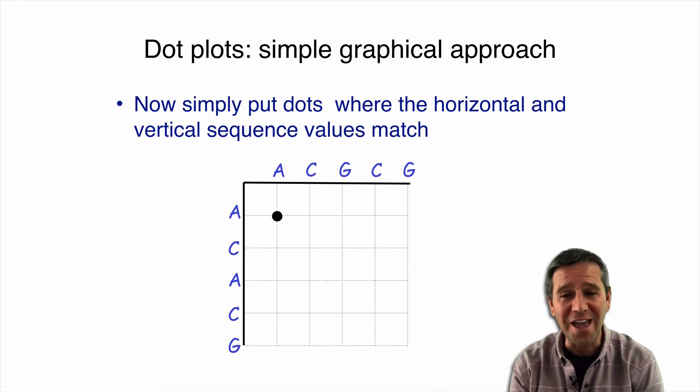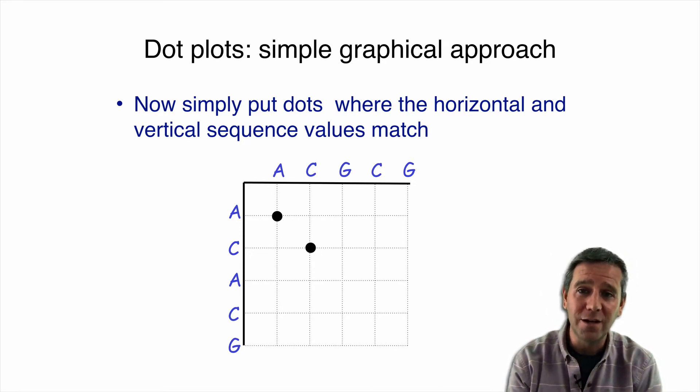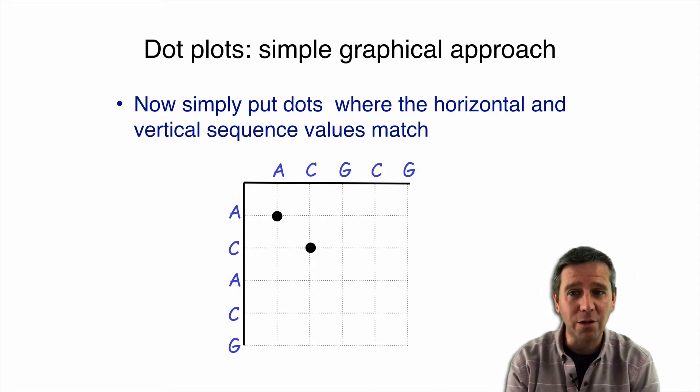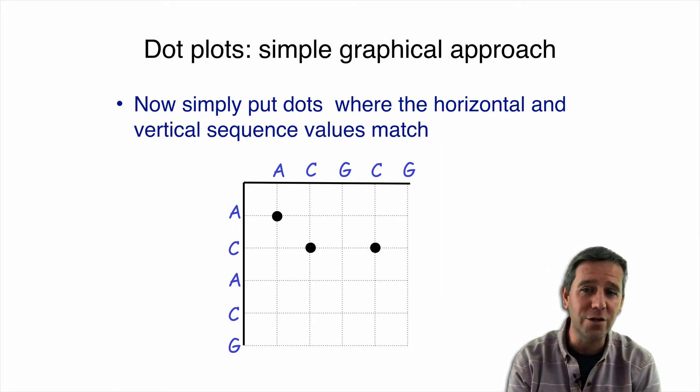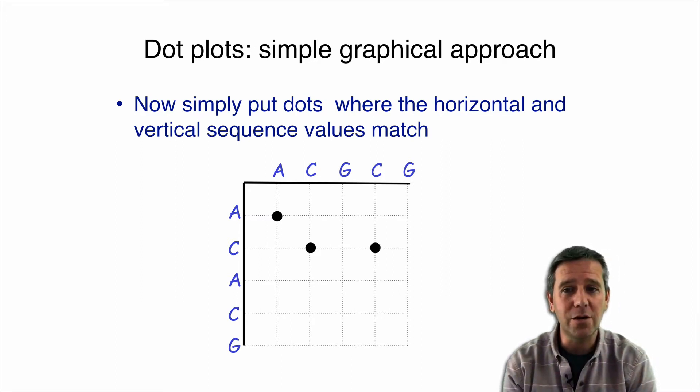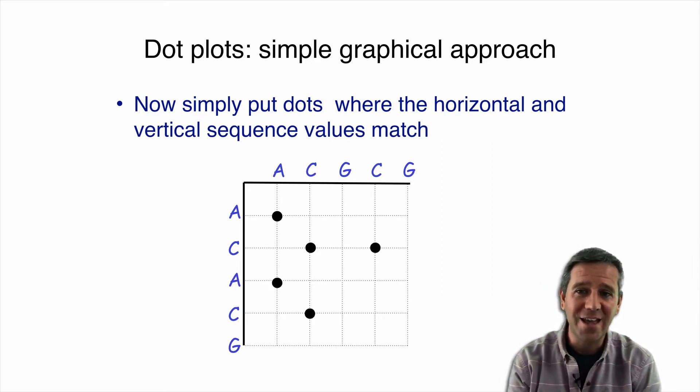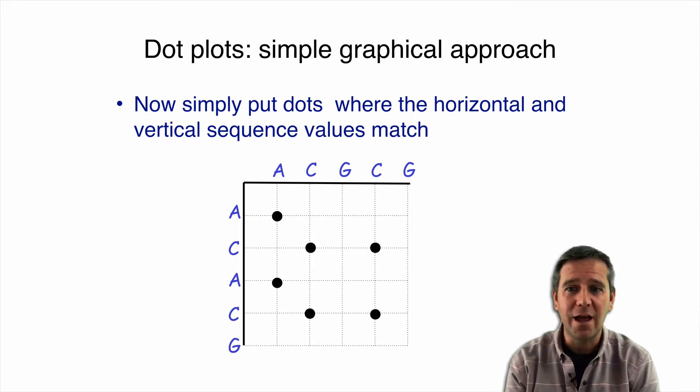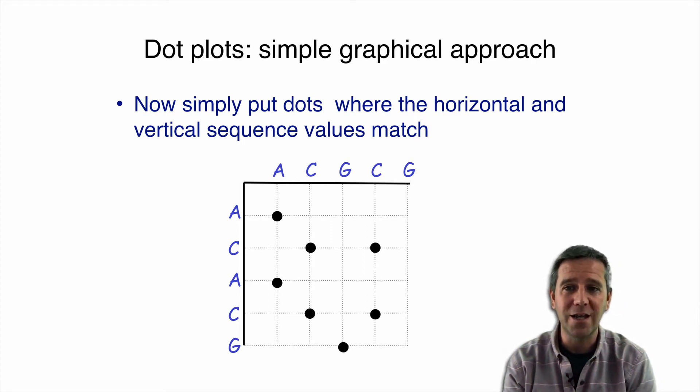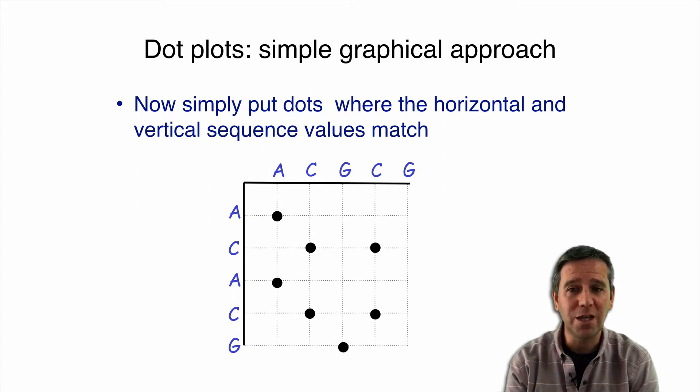In other words, where the characters are the same in these two sequences. Like so. We have our A with our A, so we put a dot. And then we go across and the next match will be this C with a C. There's another C with a C here, and an A with an A, a C with a C again, a C with a C again, and a G with a G. And then finally, one last G with a G. So we've placed all these dots in our dot plot, or our little alignment matrix here.